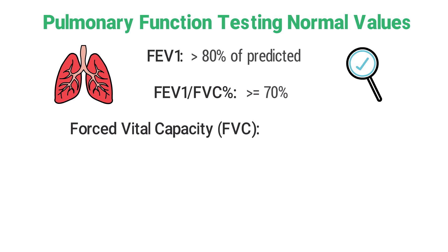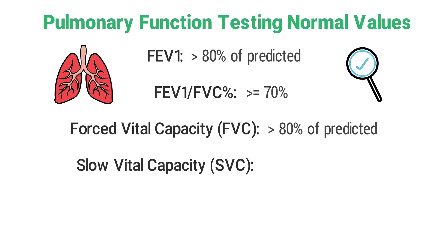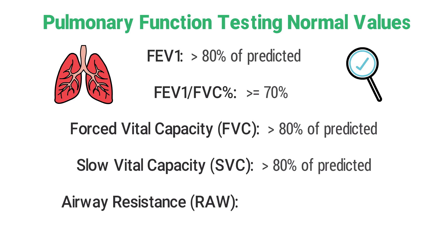The normal FVC, or forced vital capacity, should be greater than 80 percent of the predicted value. The normal SVC, or slow vital capacity, should also be greater than 80 percent of the predicted value. The normal range for airway resistance, or Raw,